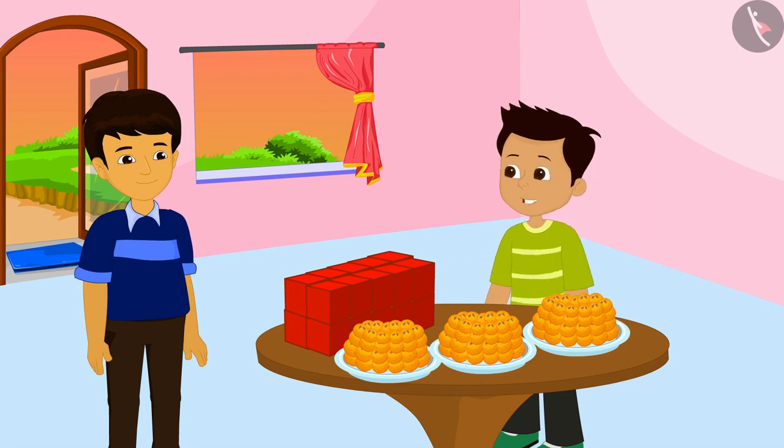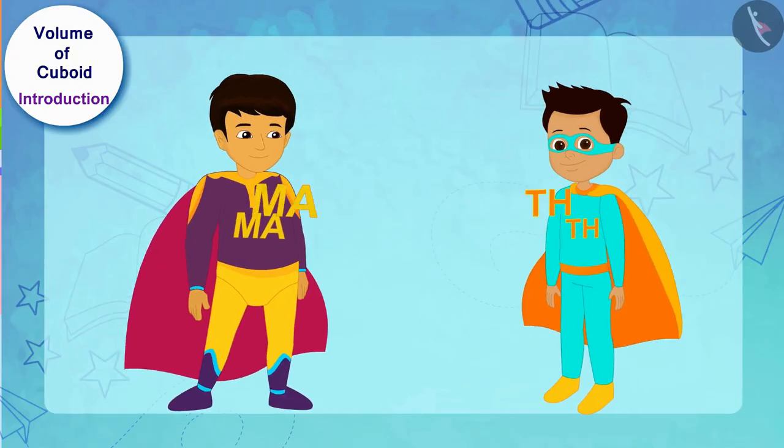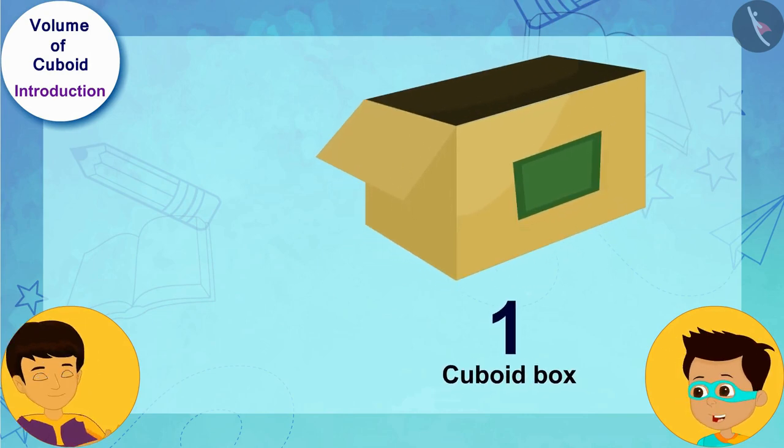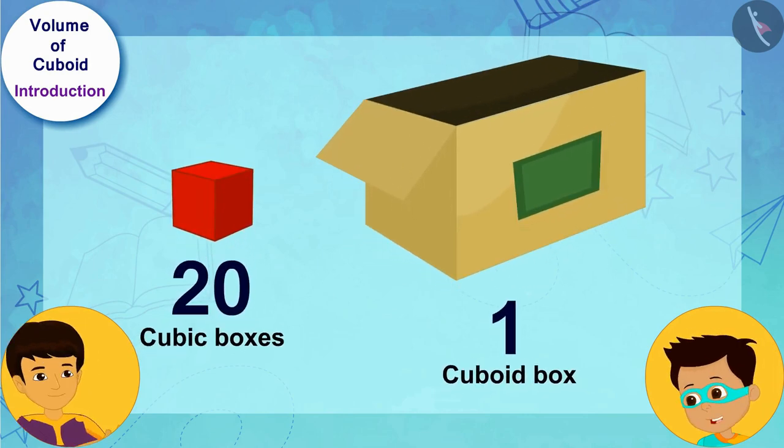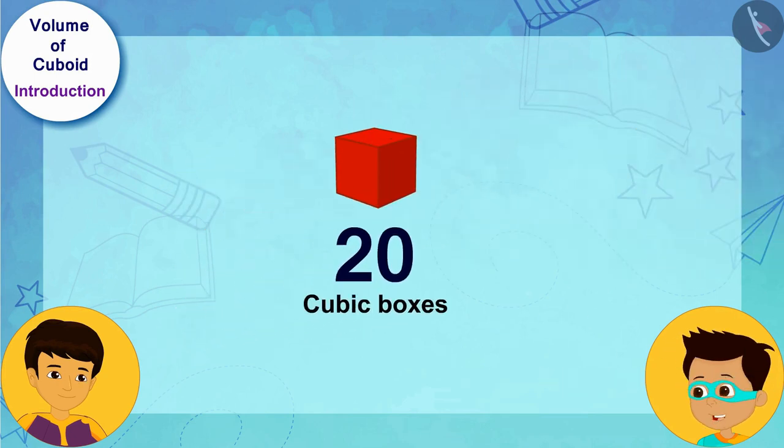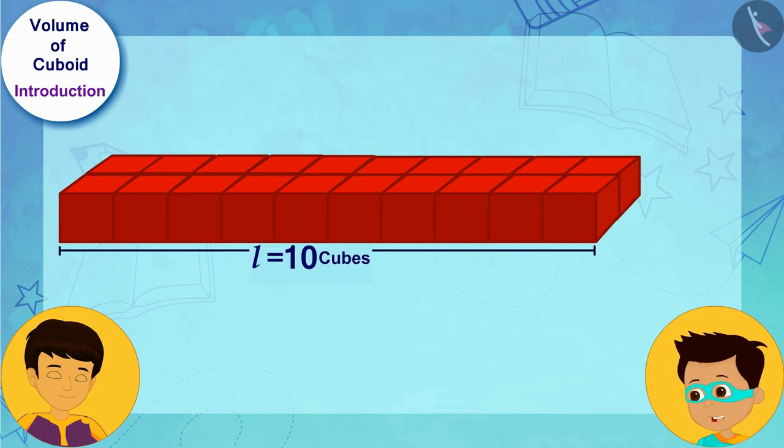Look, you need a cuboid box to hold 20 identical cubic boxes. You can arrange these 20 identical cubic boxes in many ways. For example, in this cuboid, there are 10 cubes in the length of the base of the cuboid and it is 2 cubes in width.